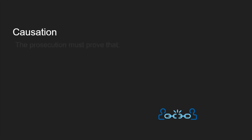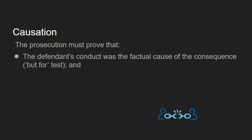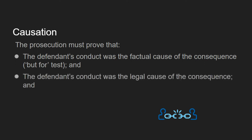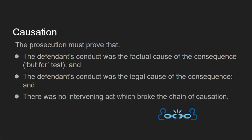To summarise: the prosecution has to prove three things when talking about causation. First, that the defendant's conduct was the factual cause of the consequence — use the but for test. Second, that the defendant's conduct was the legal cause of the consequence — usually use Padgett: was the defendant's action a significant contribution to the result? And lastly, were there any intervening acts which broke the chain of causation? Thanks very much.